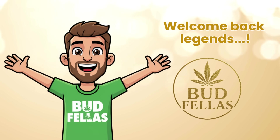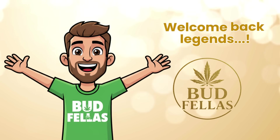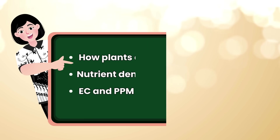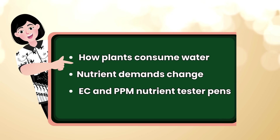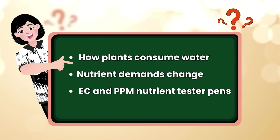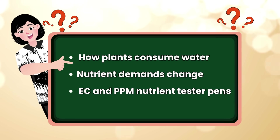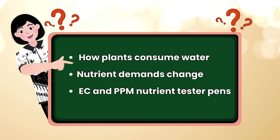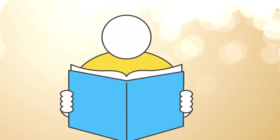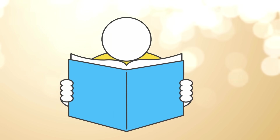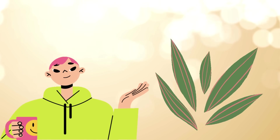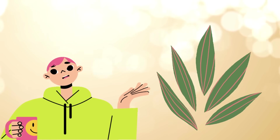Welcome back legends. Today we're taking a deep dive into one of the most essential areas of plant science: understanding how plants consume water, how their nutrient demands change throughout their life cycle, and why tools like EC and PPM nutrient tester pens are so important for measuring what's really happening in the root zone. This guide is strictly educational, designed to explain the scientific principles that influence how plants hydrate, feed, and develop over time.